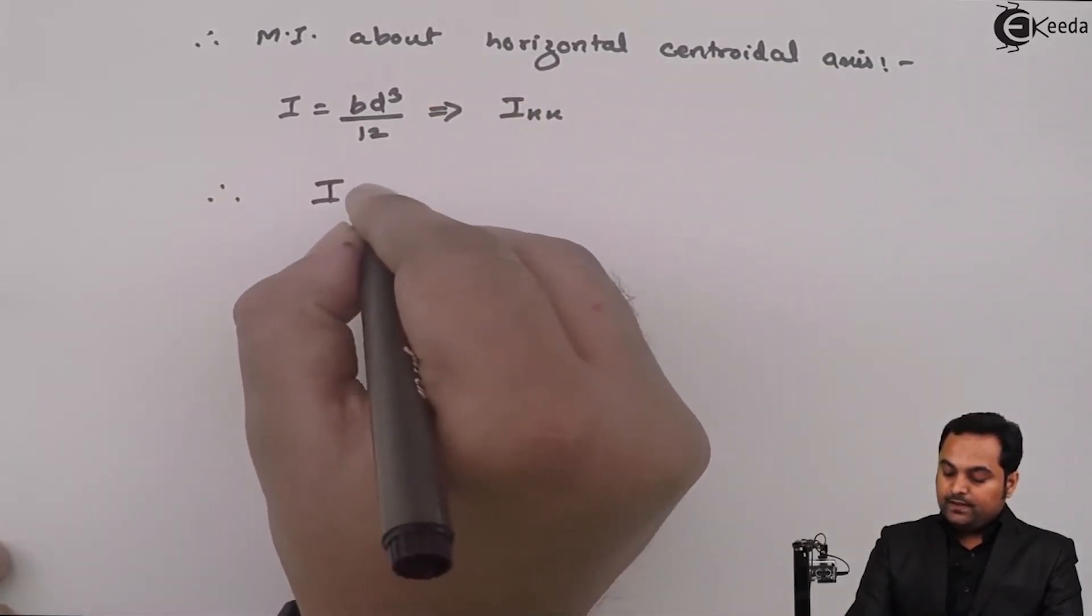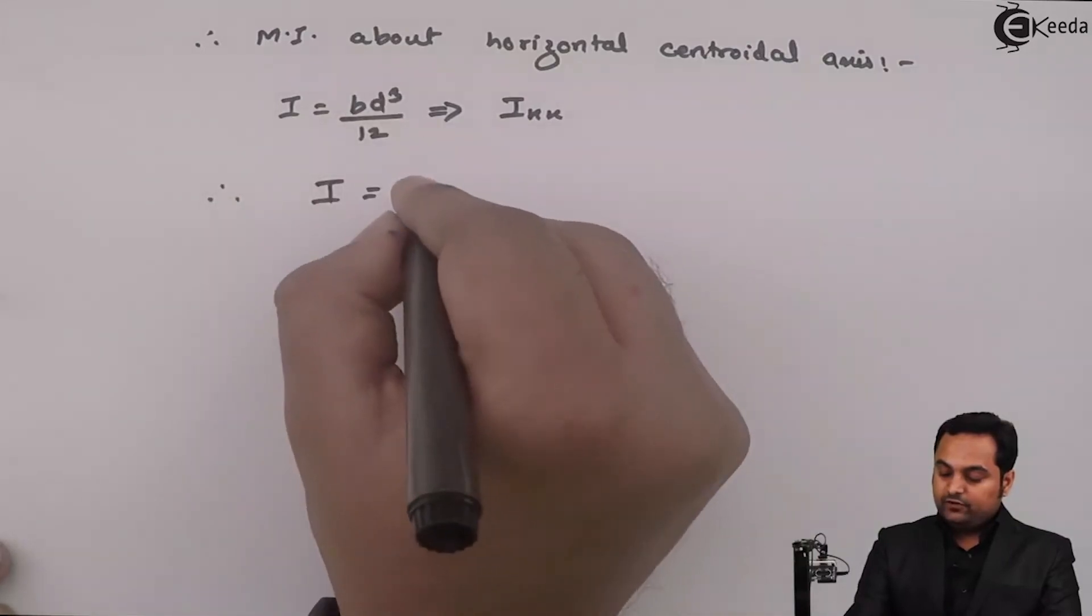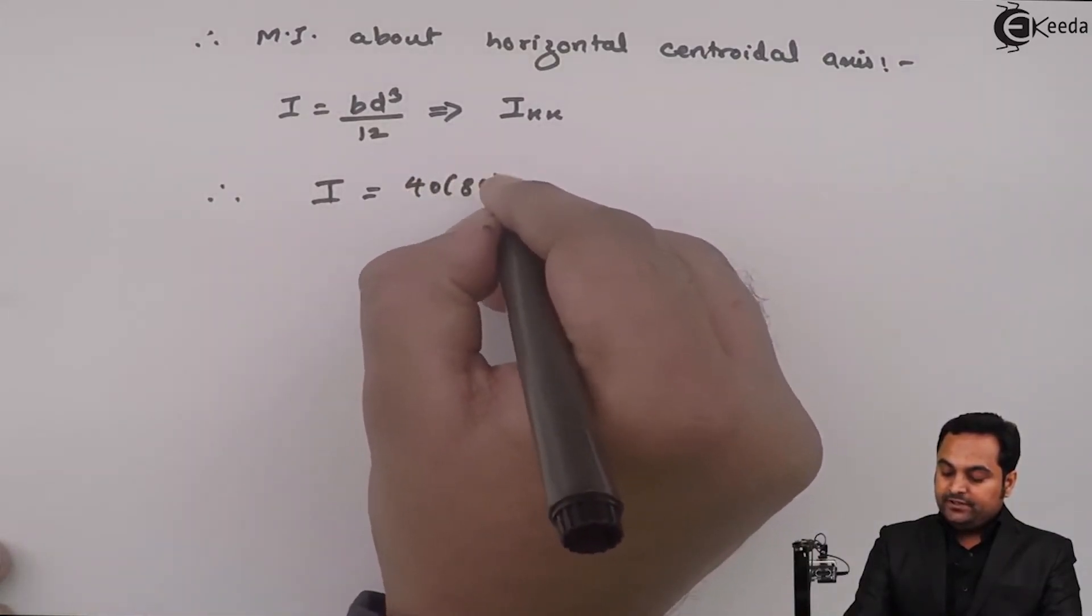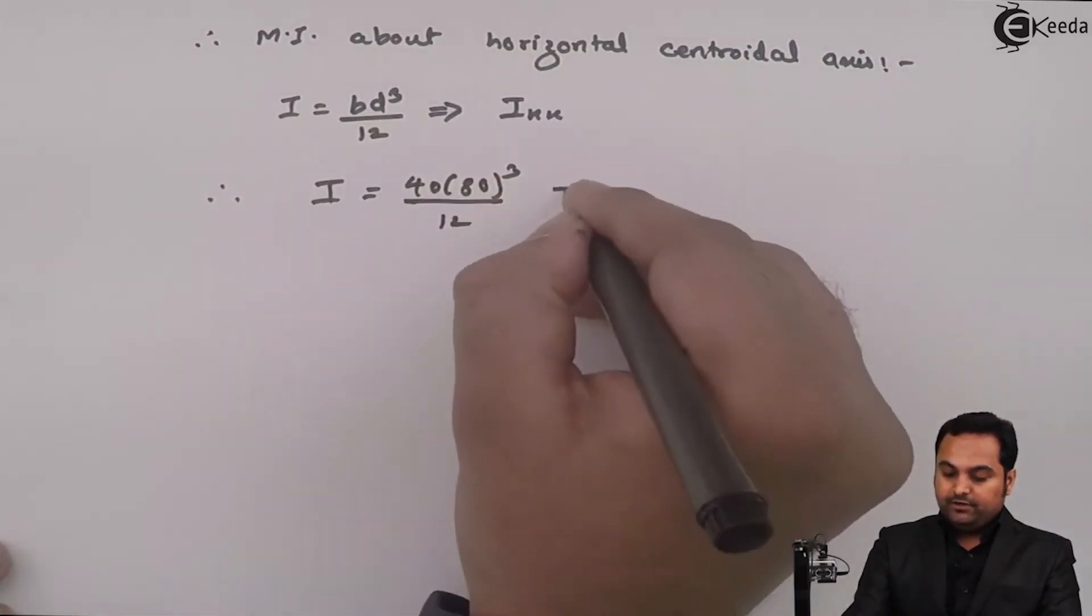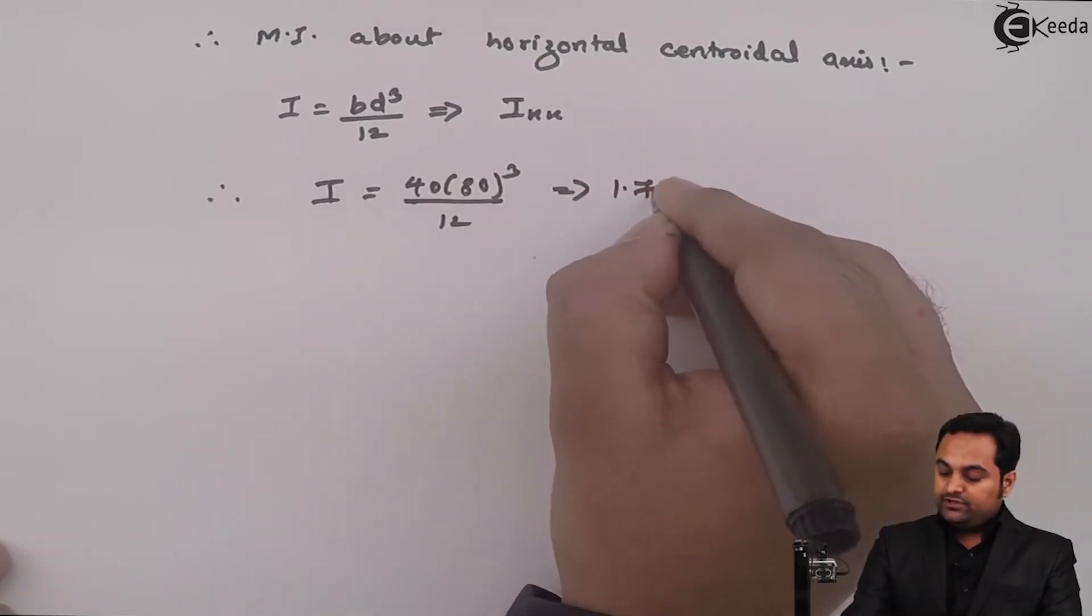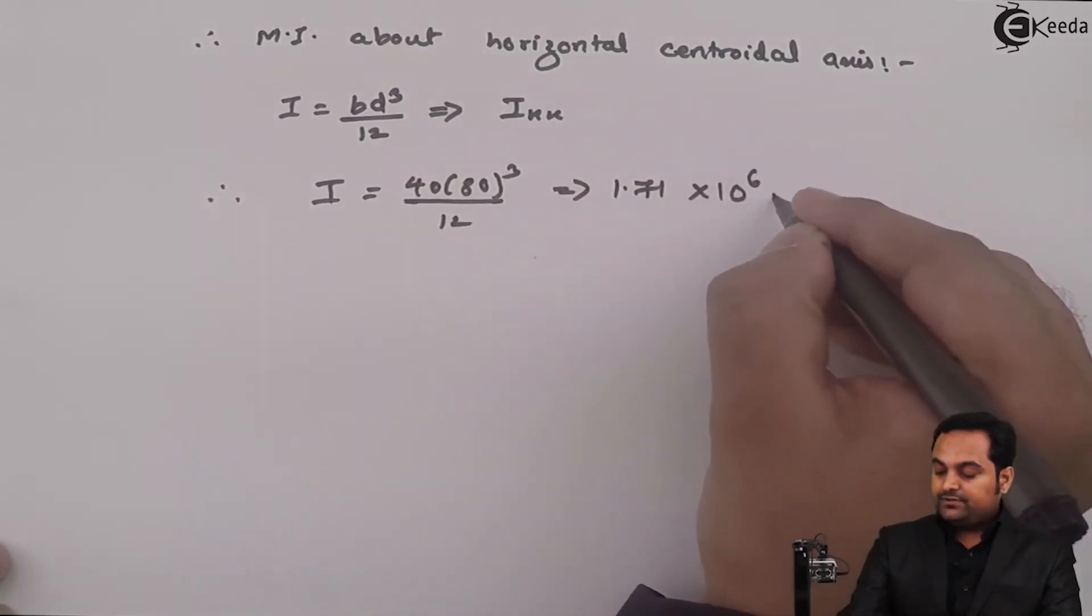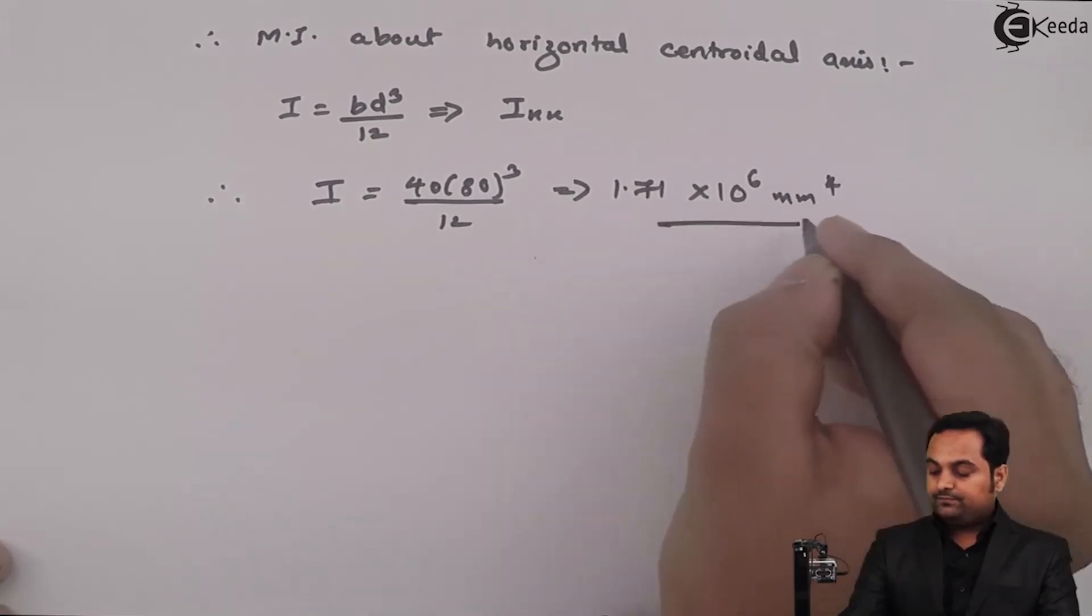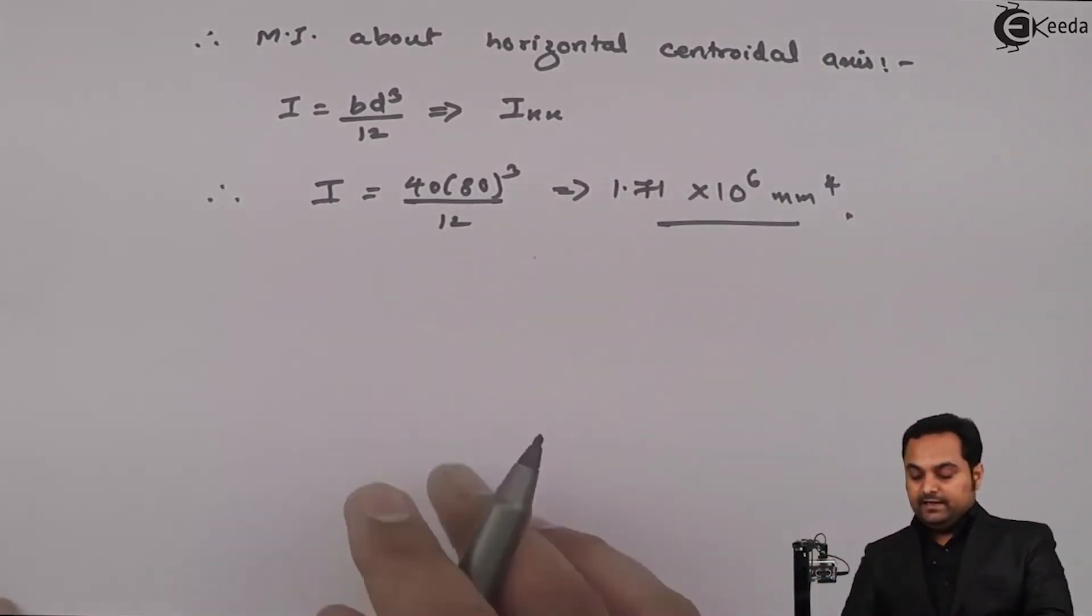So therefore I value comes out to be, B is 40, D is 80, so 40 into 80 cube divide by 12, and that is 1.71 into 10 raise to 6 mm raise to 4.